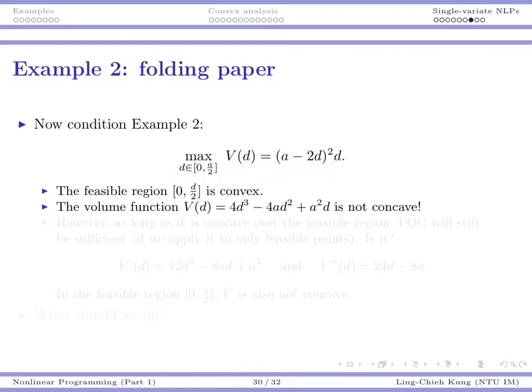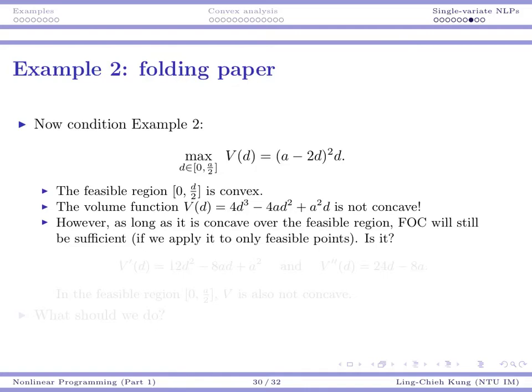Let's do another example about folding paper. So, we want to solve this problem, just one variable. The feasible region, again, is convex. But, unfortunately, the function now is not concave in general. We can see this immediately because this is a third degree polynomial. For third degree polynomials, naturally, it looks like this or that. In either case, it cannot be concave or convex. So, we actually don't need that, right? We only need it to be concave over the feasible region.